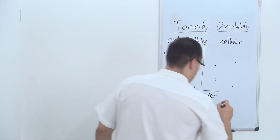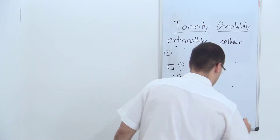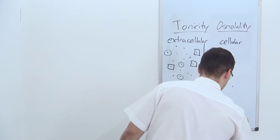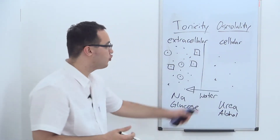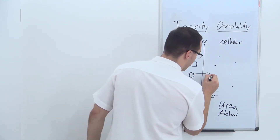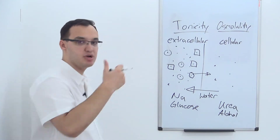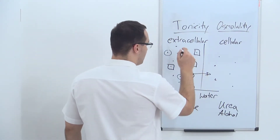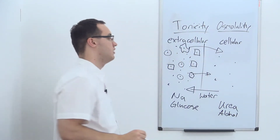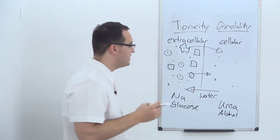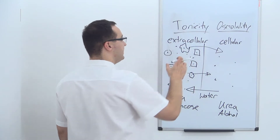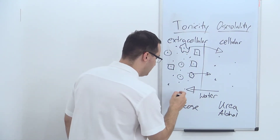If you look at other things like urea or alcohol, these are examples of solutes that can move through the membrane — they are permeable. Alcohol can also move to the other side. This means that tonicity is related to solutes like sodium and glucose which cannot cross the membrane.